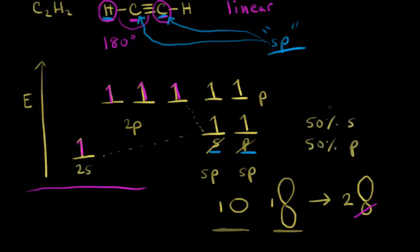This is more s character than in the previous videos. In sp3 hybridization we had 25% s character; in sp2 hybridization we had 33% s character. For these sp hybrid orbitals we have even more s character — up to 50%. Since there is increased electron density closer to the nucleus for an s orbital than for a p orbital, this lobe has increased electron density closer to the nucleus. That's one way to think about why bonds get shorter as you increase in s character — smaller hybrid orbitals lead to shorter bonds.